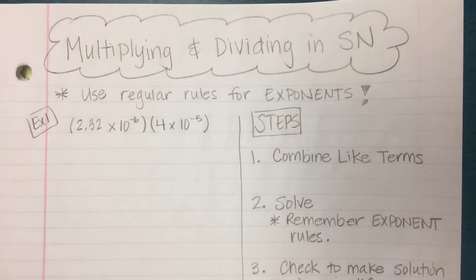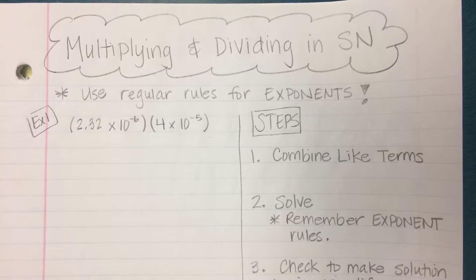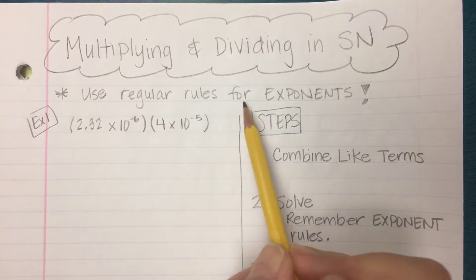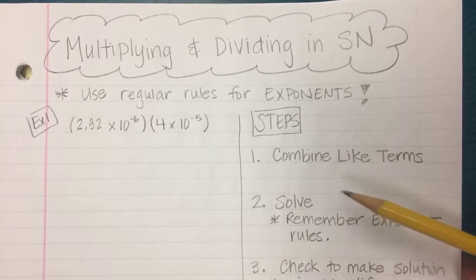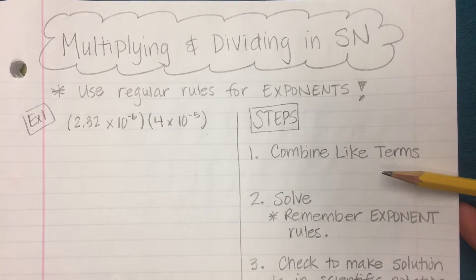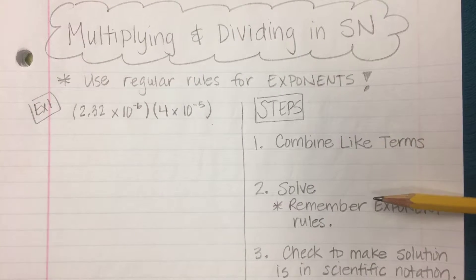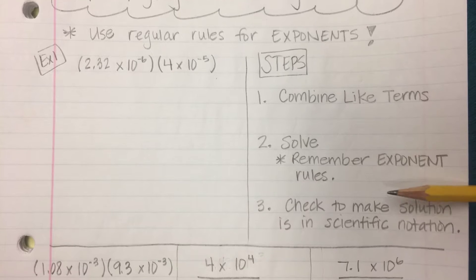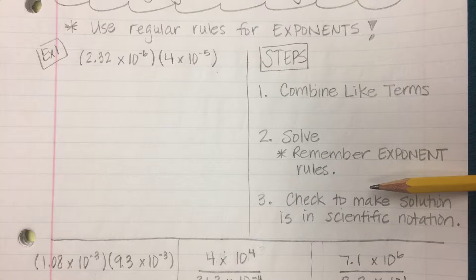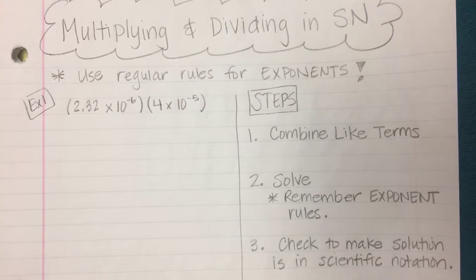Today we're going to be multiplying and dividing numbers in scientific notation. The thing we need to remember is that we're going to use our regular rules for exponents. Our steps are over here on the side: first, combine our like terms; then solve using our exponent rules; and finally, check and make sure our solution is in scientific notation. Let's go ahead and take a look at our first example.